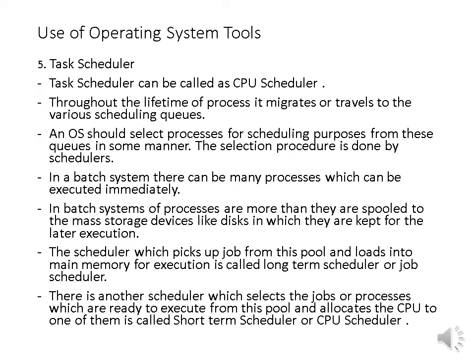This selection is mostly done by schedulers. In a batch system, many processes can be executed immediately or spooled to a mass storage device for later execution. The long-term scheduler or job scheduler picks up the job from this pool and loads it into main memory for execution. The short-term scheduler or CPU scheduler selects jobs or processes that are ready to execute and allocates the CPU to one of them.